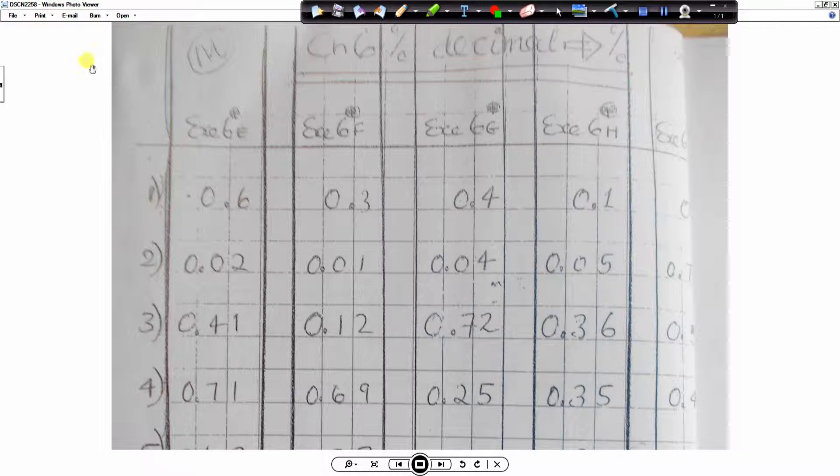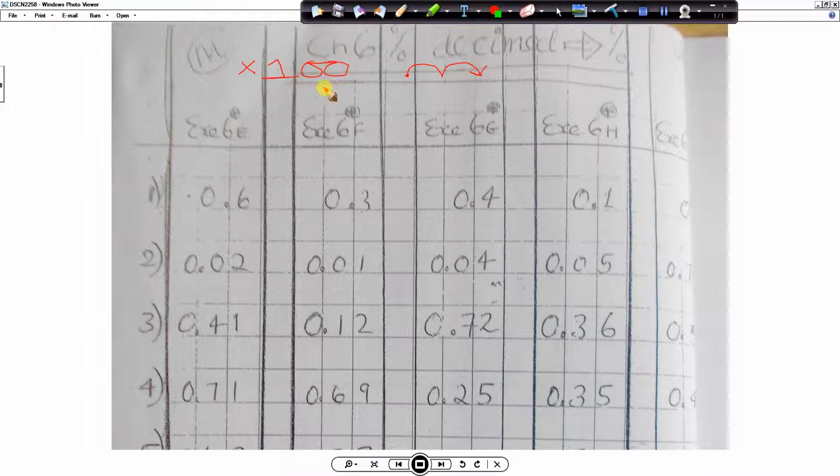Now, the technique for changing any decimal into a percentage is the world's easiest technique. We get any decimal number and we simply multiply it by—supposed to be 100. When you multiply by 100, Leila, what do you do? Move the decimal point to the right by two places.